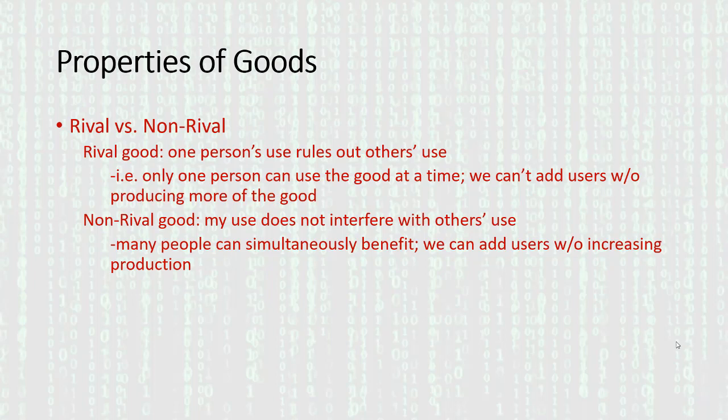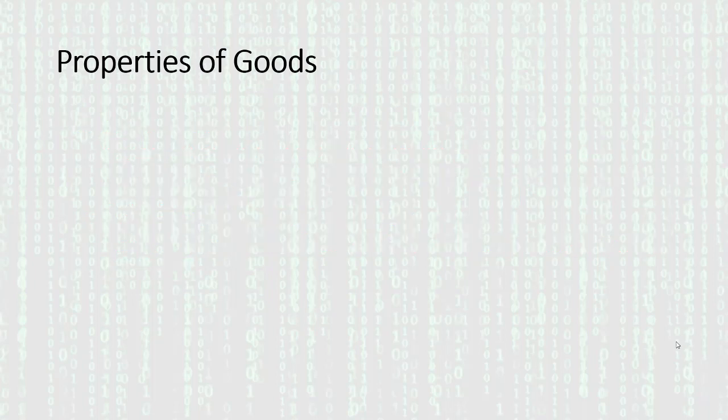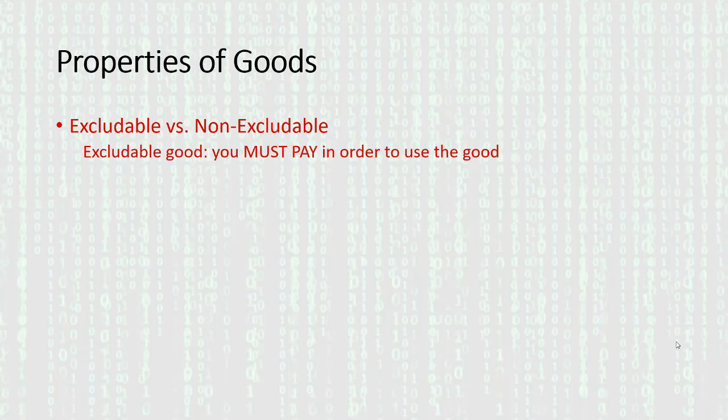The broadcast itself is what's non-rival. The radio unit itself would be rival to a certain extent, because you can't be listening to my radio at your house. So we've got the rival/non-rival dimension, and then we've got the excludable/non-excludable dimension.